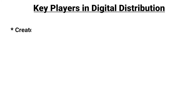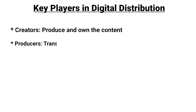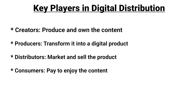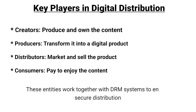Key players in digital distribution: creators produce and own the content, producers transform it into a digital product, distributors market and sell the product, and consumers pay to enjoy the content. These entities work together with DRM systems to ensure secure distribution.